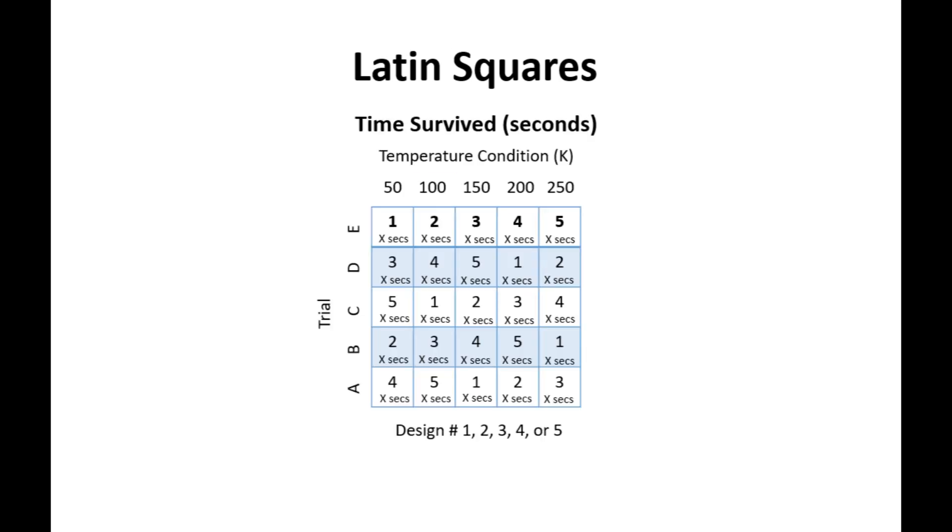Let's take a look at this experiment here. For this Latin square we have the three conditions being the trial from A to E, the temperature condition ranging from 50 to 250 Kelvin, and of course the different types of designs we are testing in this hypothetical experiment.